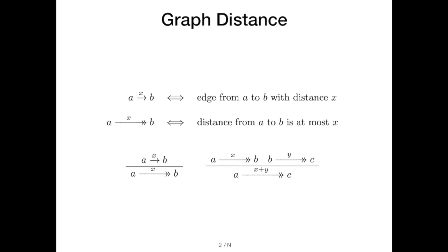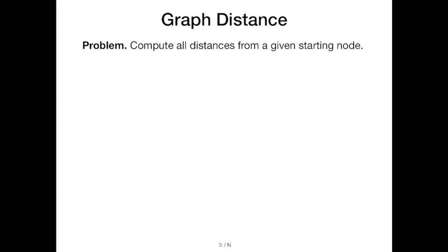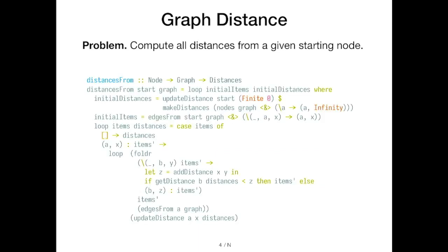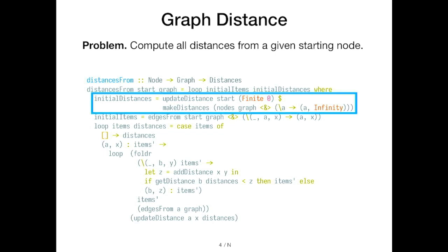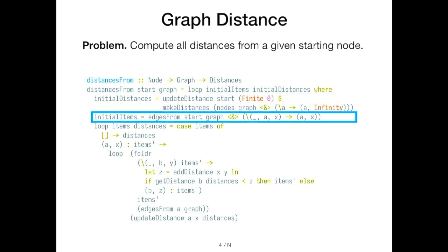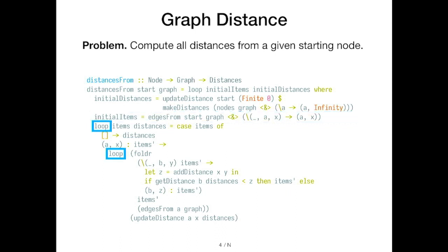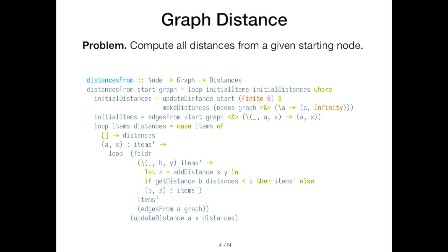How would we write this directly in Haskell? A naive implementation for computing all the distances in our graph could look like this. Don't worry about reading this code — I'll highlight the important details. We have the initial distances initialized to infinity except for the start, which is zero. We have the next edges to explore, starting from the starting node. Then we have a loop that processes items to visit next and pushes new items onto the queue. We also have a check to see if a visit actually did an update, meaning we have to explore the nodes from there again.